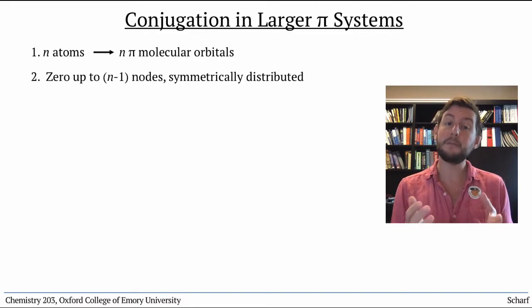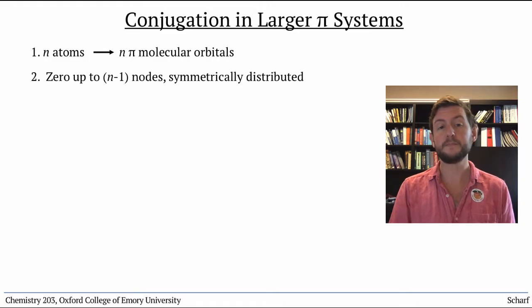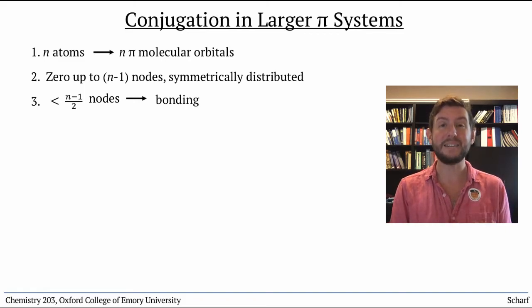And the orbital with N-1 nodes has a node between each pair of adjacent atoms. Number three, all molecular orbitals with less than N-1 over 2 nodes are bonding orbitals.